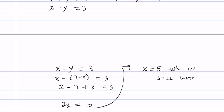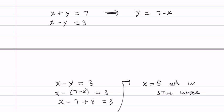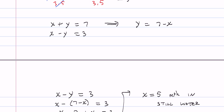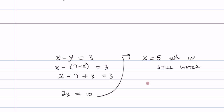Now we want to find the rate of the current. We can find the rate of the current by going up to this equation here: y is equal to 7 minus x, which was derived from this first equation in the system of equations. So y is equal to 7 minus x becomes y is equal to 7 minus 5, which is equal to 2.